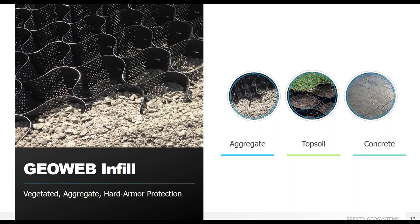The second attribute in the GeoWeb system is the infill material. There are three main infill types for slopes, depending on the type of protection needed: topsoil, aggregates and granular soils, and concrete. In most cases, this allows for the use of onsite materials without the need to import fill.